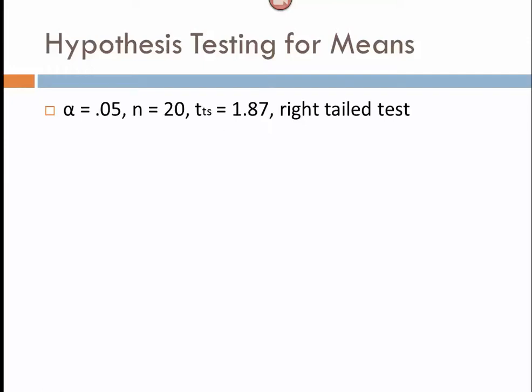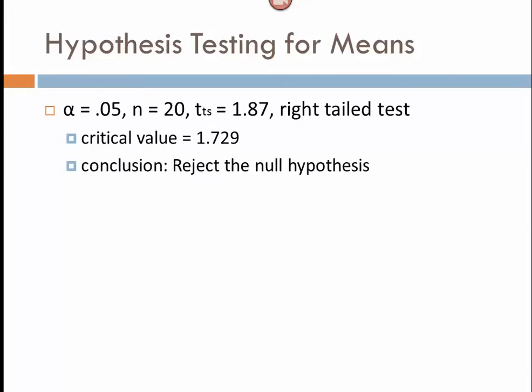The result ends up being, my critical value is 1.729. So, looking at the picture you've drawn, the question is, does your test statistic warrant rejection of the null hypothesis? The conclusion here is, yes, we are going to reject the null hypothesis. If you look at your picture, 1.87 fell into my rejection region because my critical value, the one I needed to get past, was 1.729.